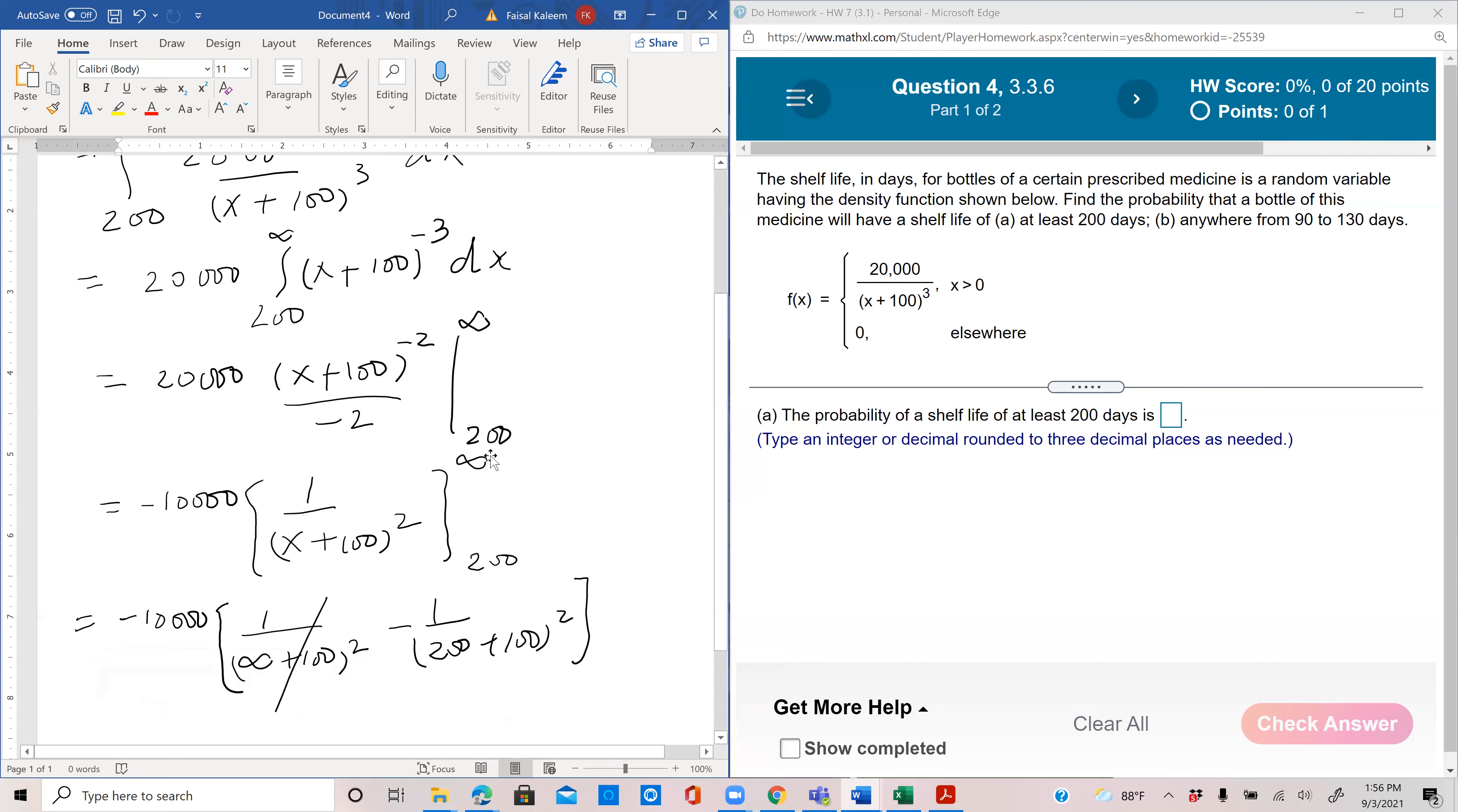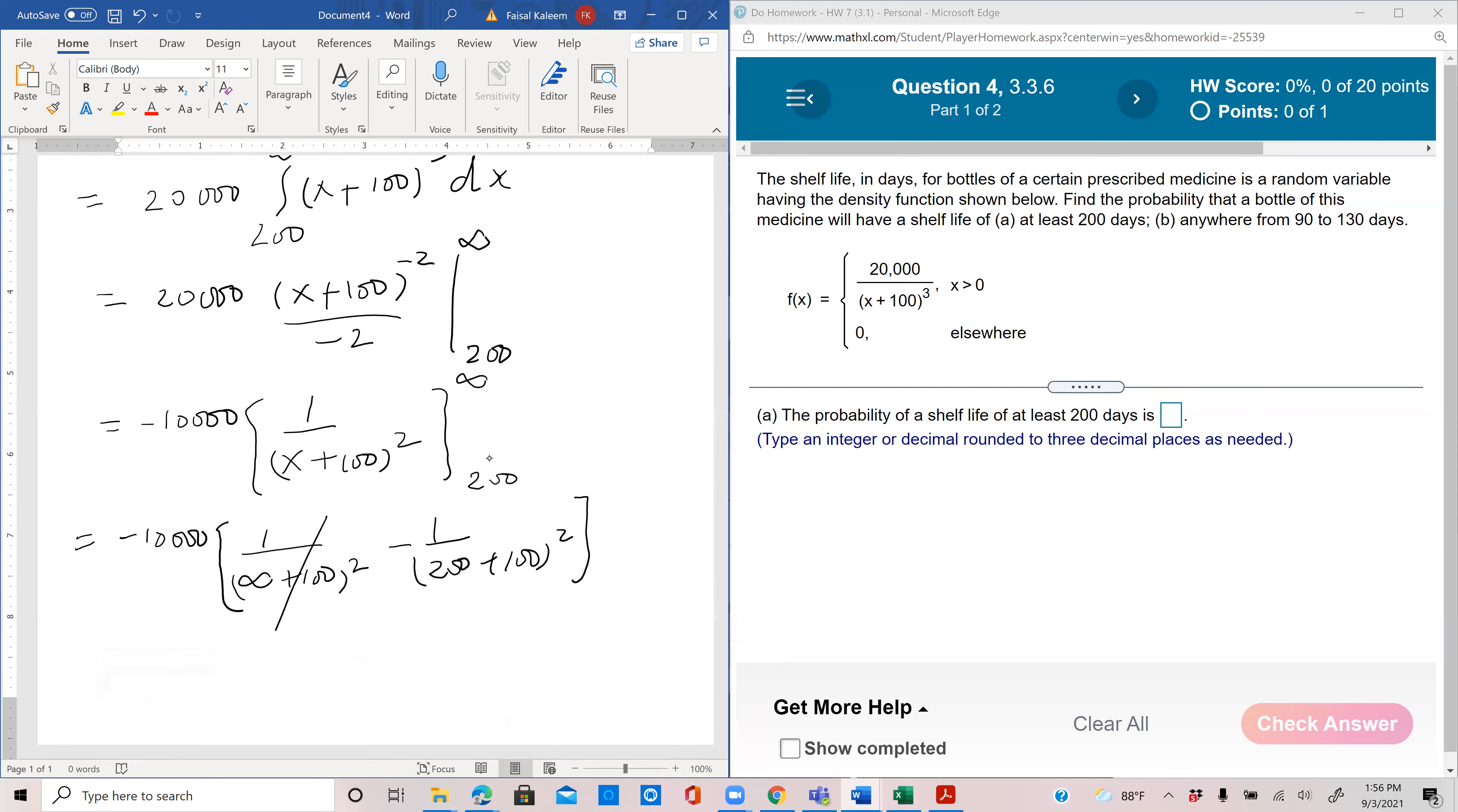That part is 0 and you are left with 10,000 over 300 squared. The negative and the negative become a positive, so this would be 10,000 over 90,000. That's 0.111 to three decimal places.